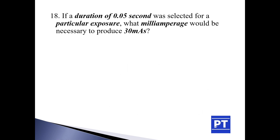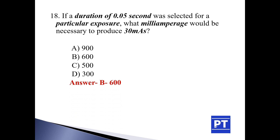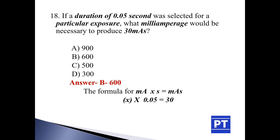Question number 18: If a duration of 0.05 seconds was selected for a particular exposure, what milliampere would be necessary to produce 30 mAs? Option A 900, option B 600, option C 500, and option D 300. The answer is B, 600. The formula is MA × S = mAs. We need to find MA, so: MA × 0.05 = 30 mAs. Solving for MA gives the answer as 600 mA.